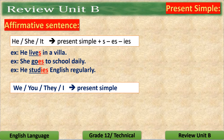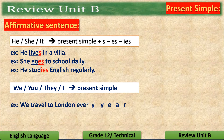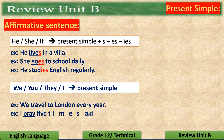While if we have a plural subject, noun or pronoun — we or I — we use the present simple without adding anything to it. Like the examples: We travel to London every year. I pray five times a day.